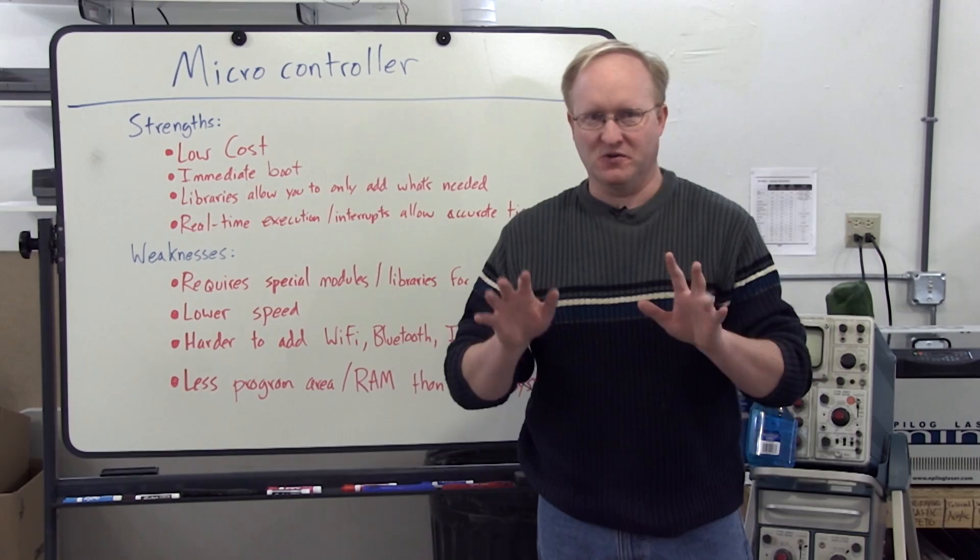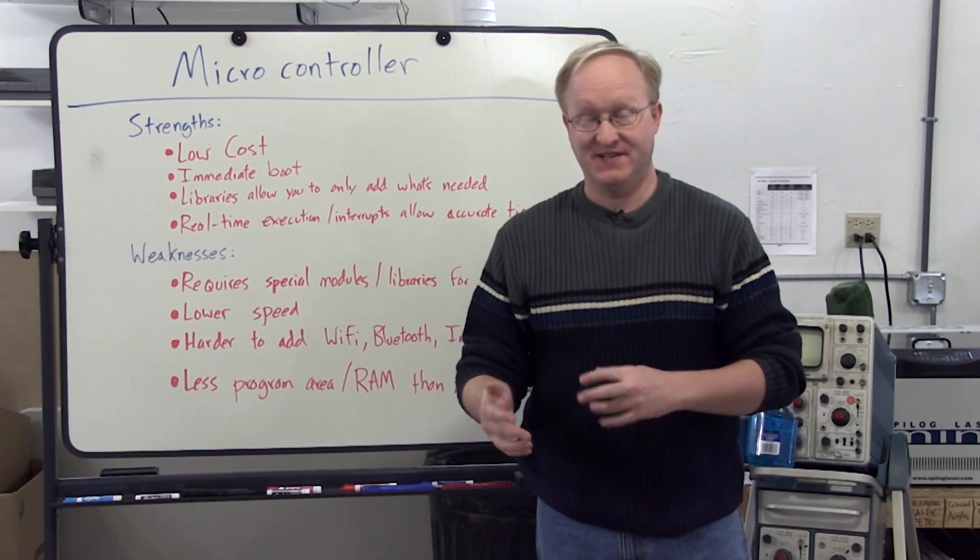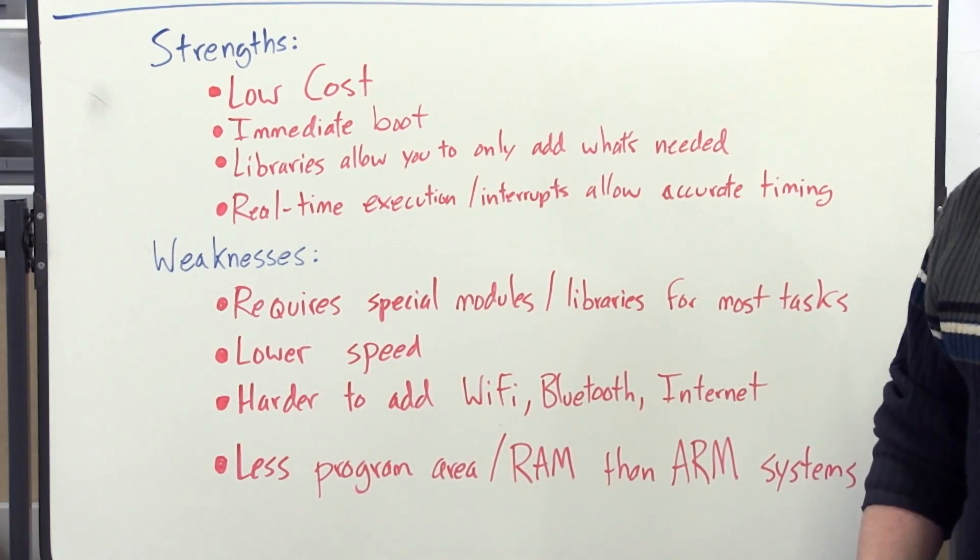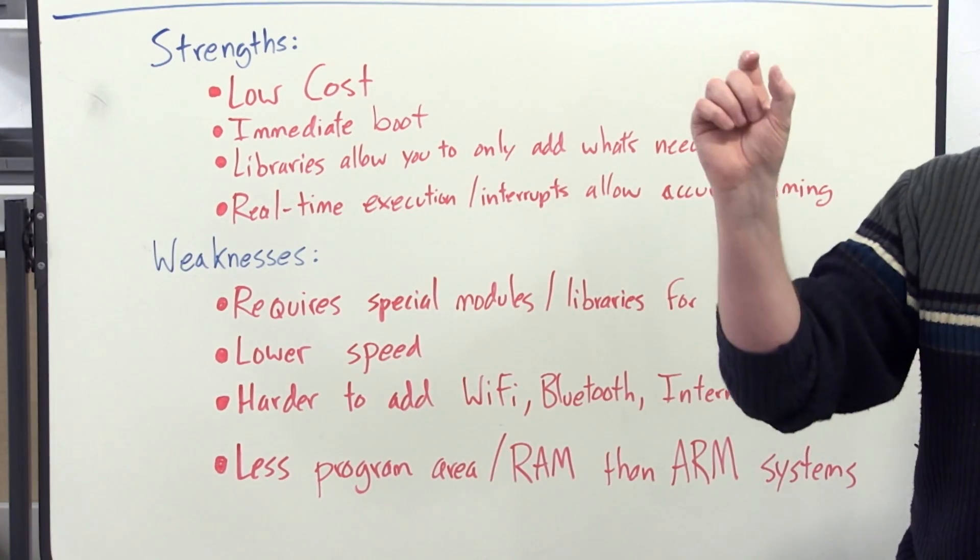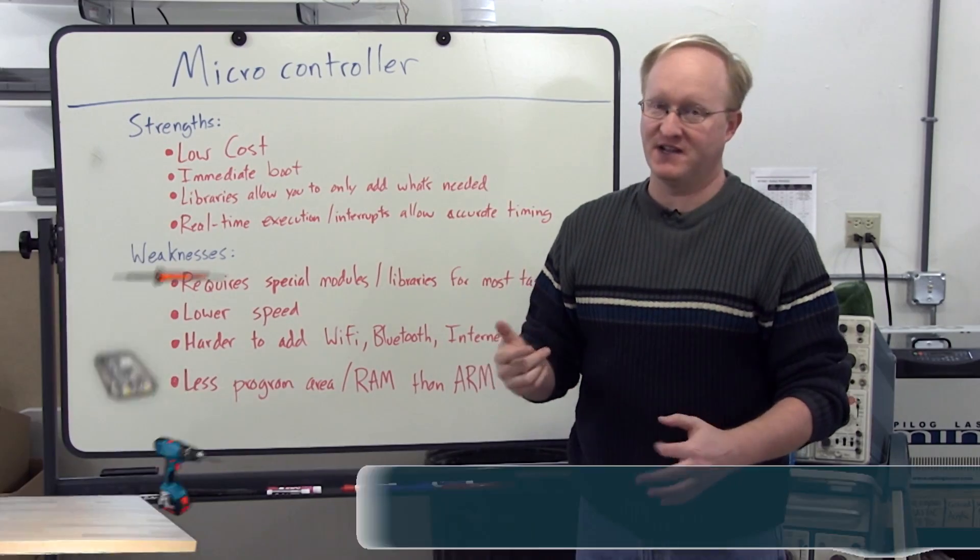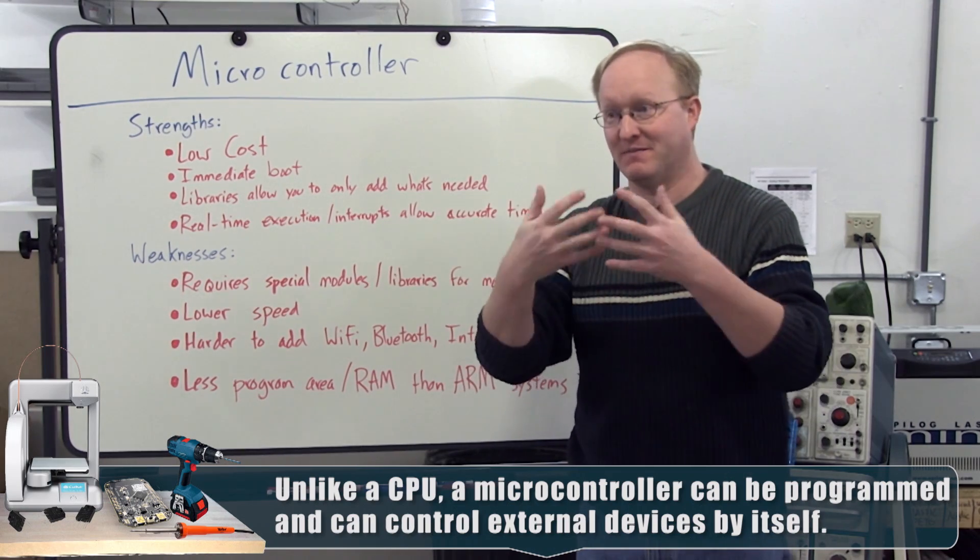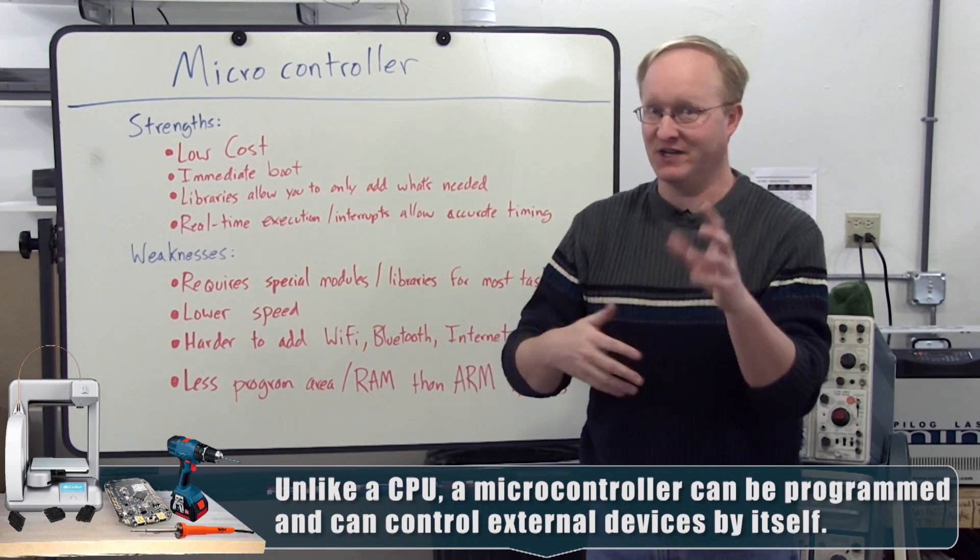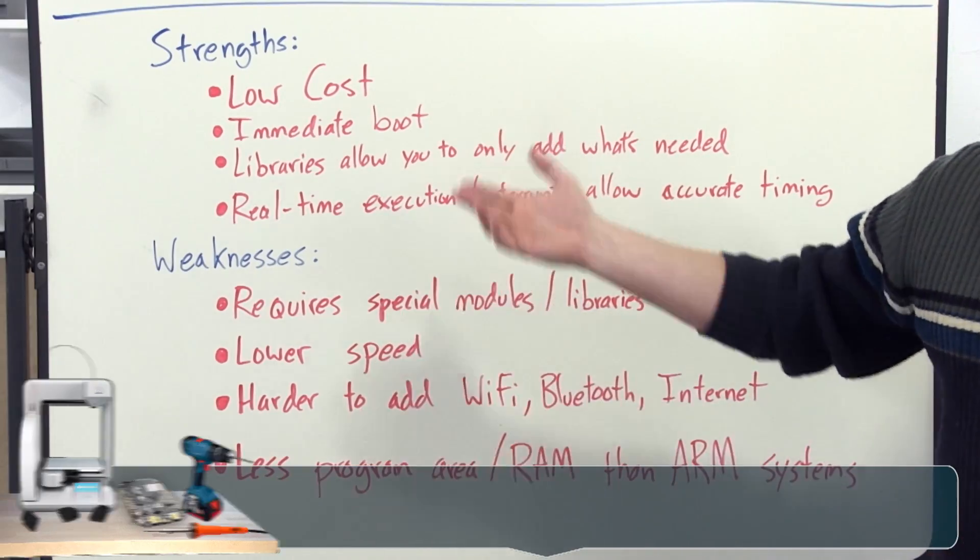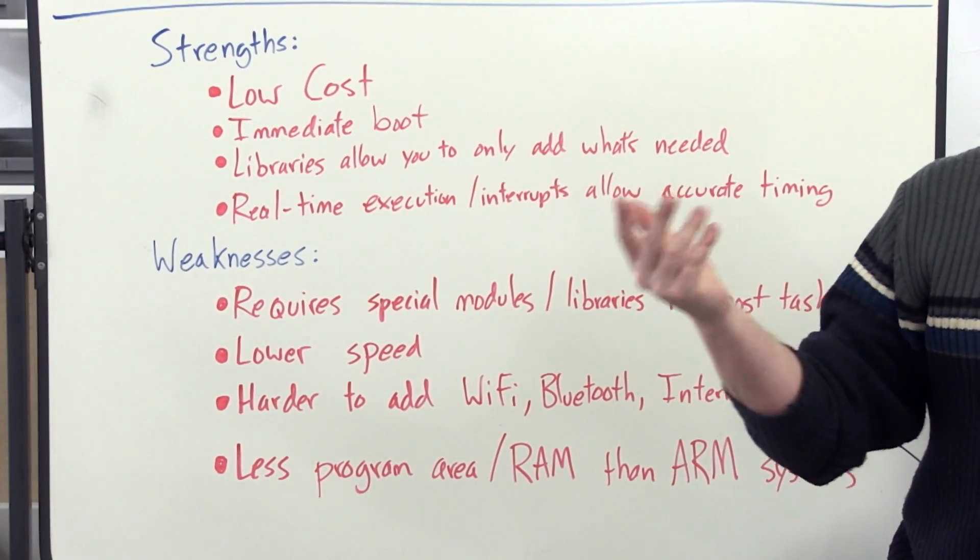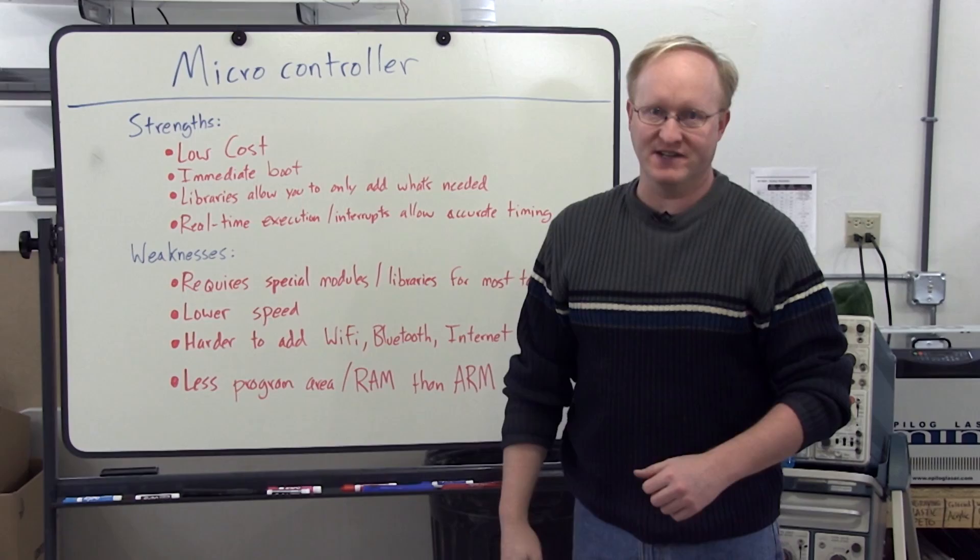Next, let's look at microcontrollers. This is probably the most general purpose thing that we use on the show. The strengths of microcontrollers are low cost. One little chip can do quite a few things. You don't always need a lot of external components because they're all in it, because it's a microcontroller, not just a CPU. It can also control things. They have an immediate boot. You turn them on, boom, they're working. It's near instantaneous usually.